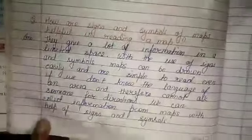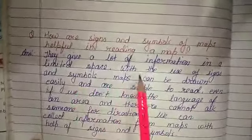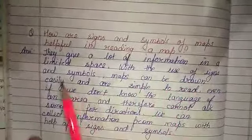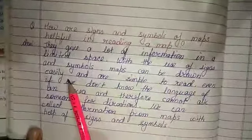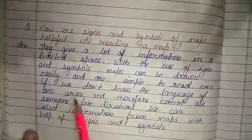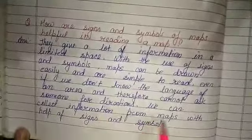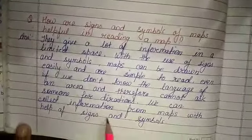And the last, how are signs and symbols of map useful in reading map? They give a lot of information in a limited space. With the use of signs and symbols, map can be drawn easily and are simple to read. Even if we don't know the language of an area, we can collect information from maps with the help of signs and symbols.